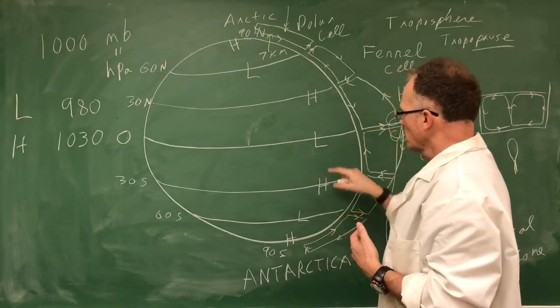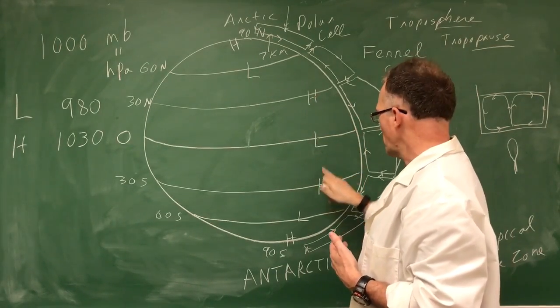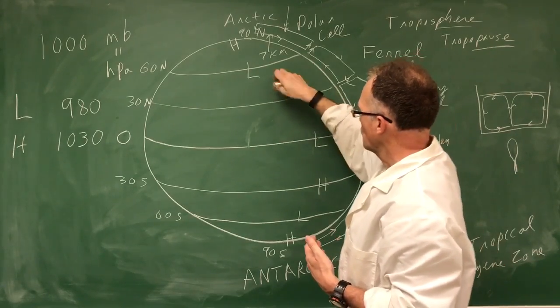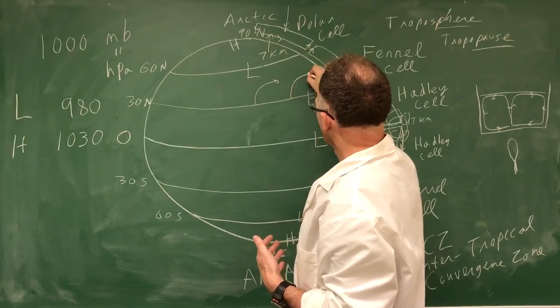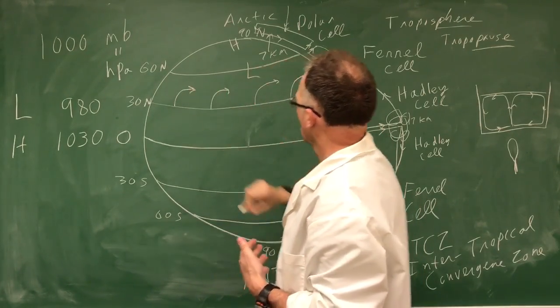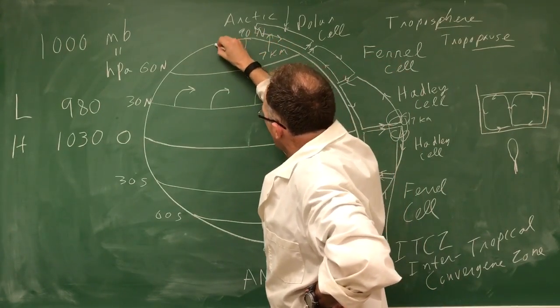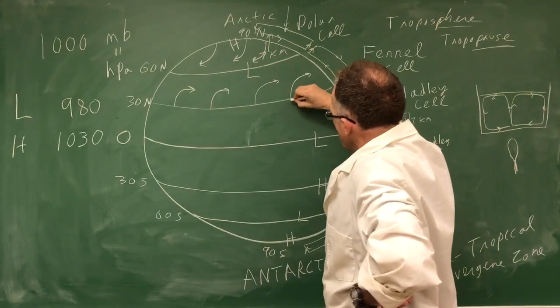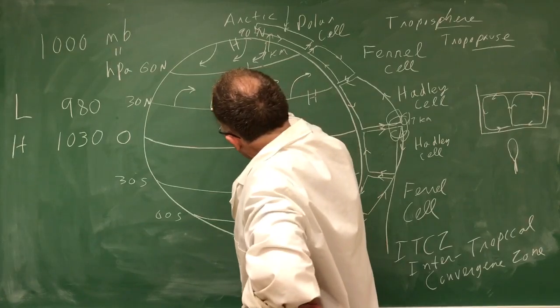But in this case, this is high pressure, this is low pressure. So air wants to go from high to low pressure. Air wants to go from high to low pressure. So here to here, it deflects to the right in the northern hemisphere from the Coriolis force. From high to low pressure, it deflects to the right. From high to low pressure, it deflects to the right. Put yourself upside down, it deflects to the right.